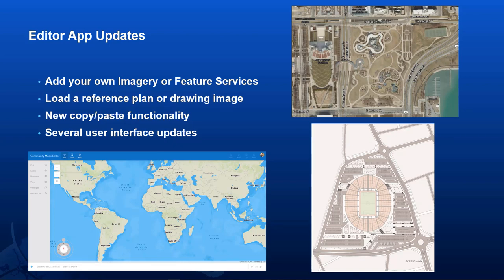Some of you watching that demo may have noticed the app looked a little different. We made some recent updates. The general functionality from the first version to this version is the same, but by popular request, we now let users add their own imagery service or feature services into the app. If you have an imagery service better than the current world imagery, you can add it in the layers panel and use it to create features. You can also load in an image of a plan or drawing of your campus, rubber sheet the image into place, and digitize features on top of it. There are also enhancements like copy and paste of features and user interface updates.